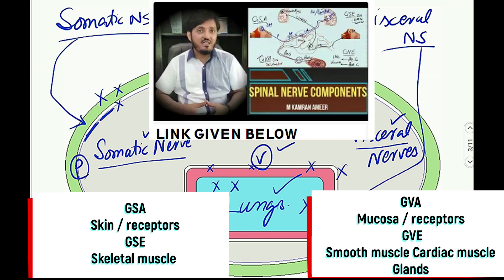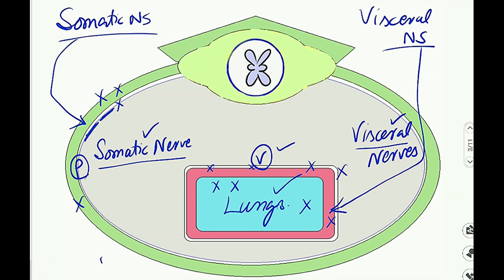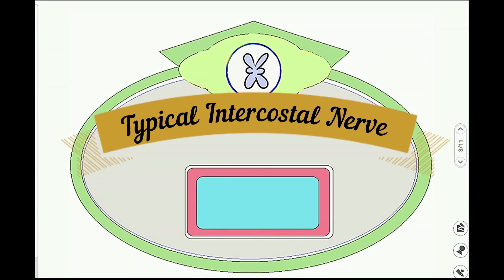Details of these four functional components are given in my video lecture about the spinal nerve components — the link is in the description. Now let's study the anatomy of the typical spinal nerve, or the typical intercostal nerve.